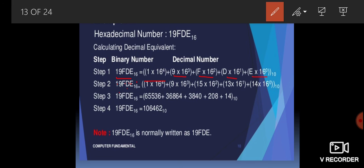After writing the values — 1, 9, F=15, D=13, E=14 — and solving, you get the answer 106462. I hope it's clear. Now do the exercise accordingly. Thank you.